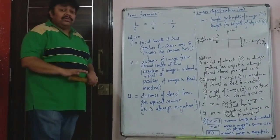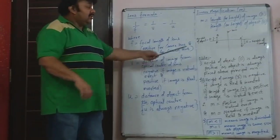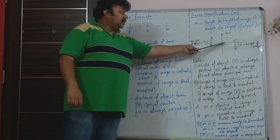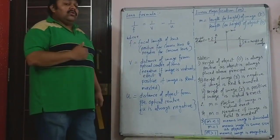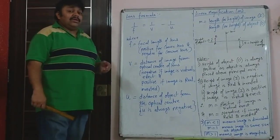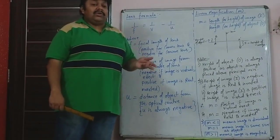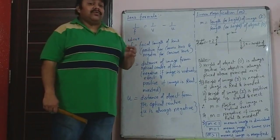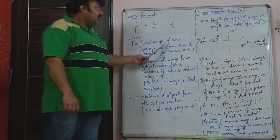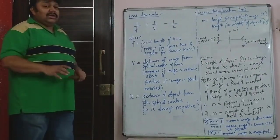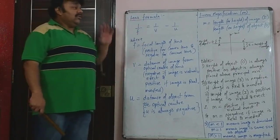You must use the lens formula 1/f = 1/v − 1/u with the correct signs. For everything — f, v, and u — you must assign the correct sign. u is always negative. If the object is placed 40 cm in front of the lens, u is minus 40, whatever the type of lens. Always use the formula with the correct sign.